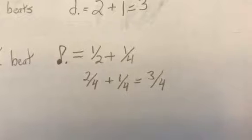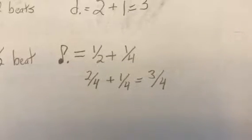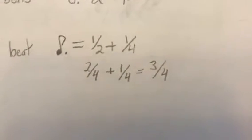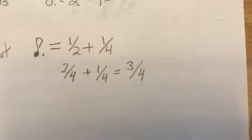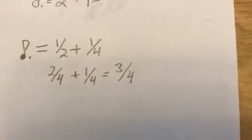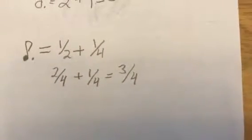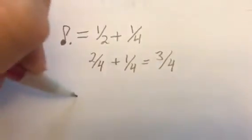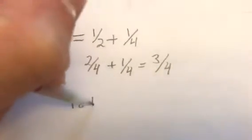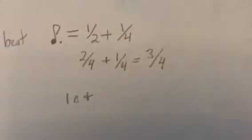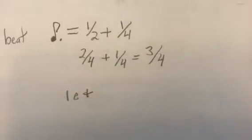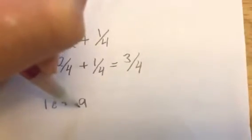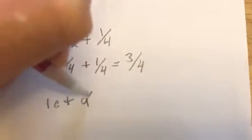We count fourths of a beat as sixteenth notes — one-E-and-a. So a dotted eighth note, if it started on beat one, would last for one-E-and. That's how long it would last. The 'a' would not be included in that note.